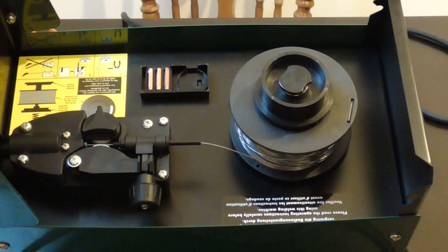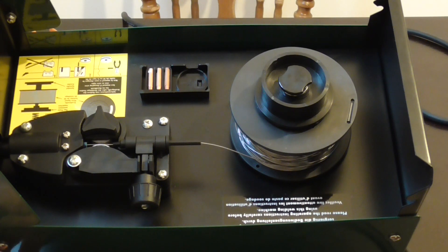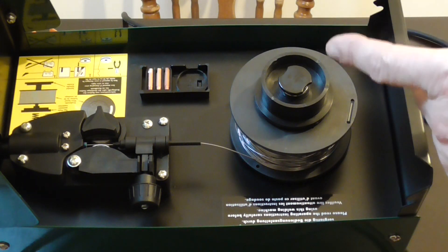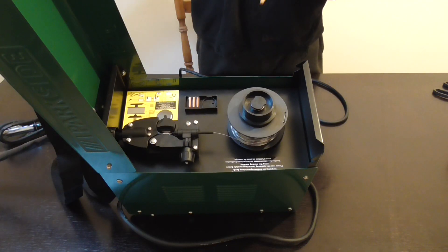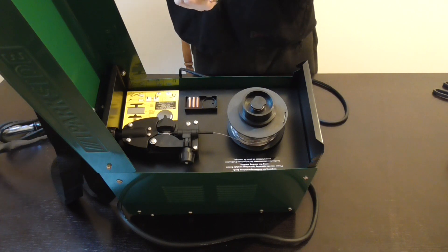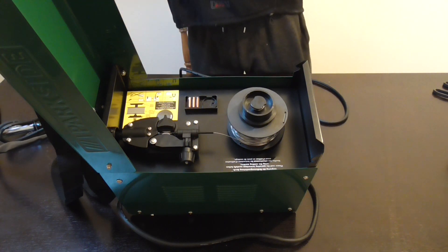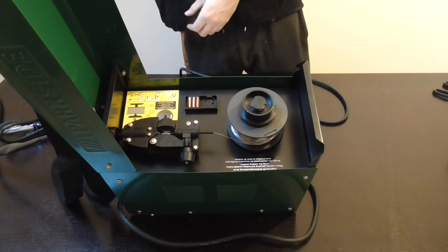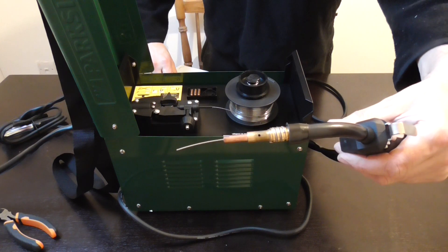Then we will turn on the machine. Now, whenever I pull the torch it's going to feed the wire through. So what you want to do is try and keep the cable as straight as possible for it to allow the wire to feed through. Bingo!